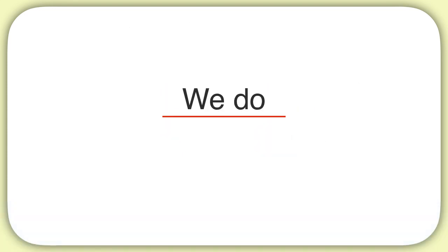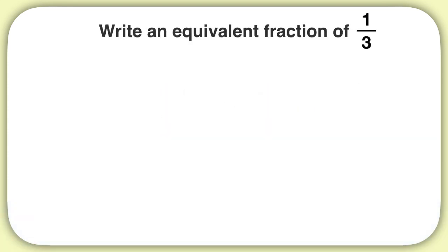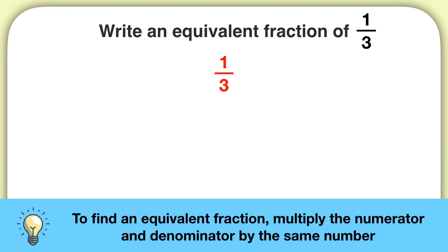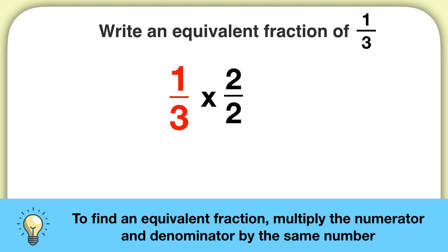Let's practice one of these together. We're going to write an equivalent fraction of 1 third. To find an equivalent fraction, we'll take our fraction of 1 third and multiply the numerator and denominator by the same number. We'll take 1 third and multiply it by 2 over 2. 1 times 2 is 2, and 3 times 2 is 6. This is the equivalent fraction 2 sixths.